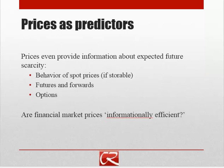Markets don't just gather information on current supply relative to current demand — they also provide information about expected future scarcity. If a good is expected to be scarcer in the future because of an increase in demand or a shortfall in supply, people will expect future prices to be higher. And if future prices are expected to be higher, people will want to buy now or hold their supplies back, so prices will rise today. The spot price — the price currently on the market — will tend to rise in anticipation of future scarcity, leading people to reduce consumption today so more will be available tomorrow.